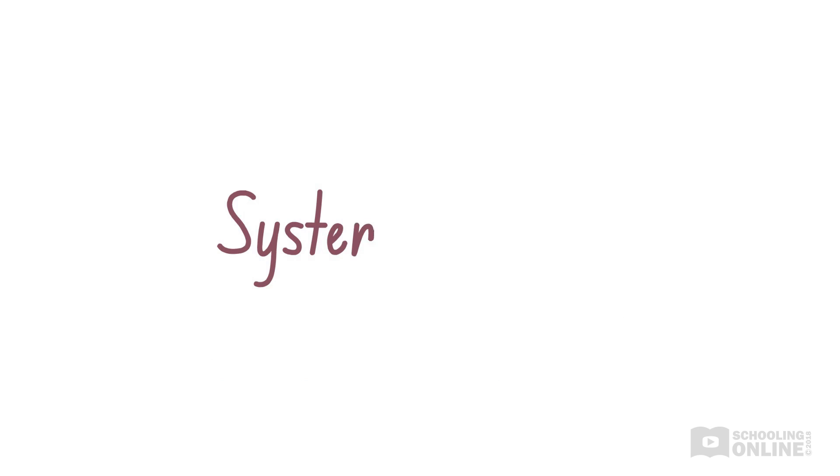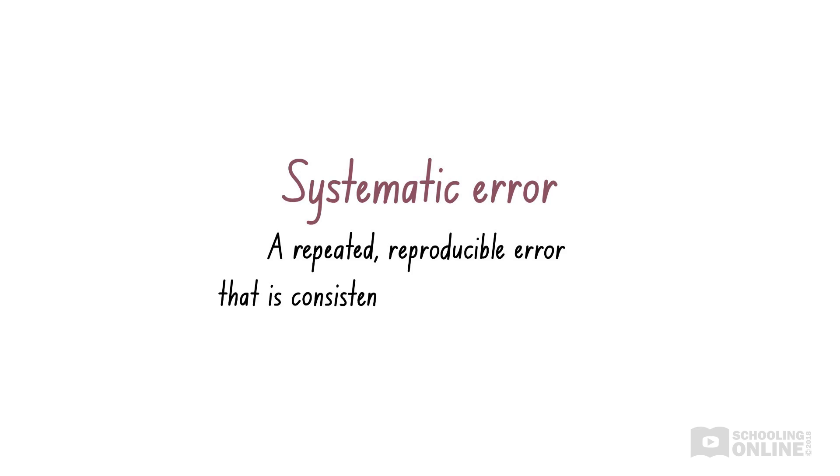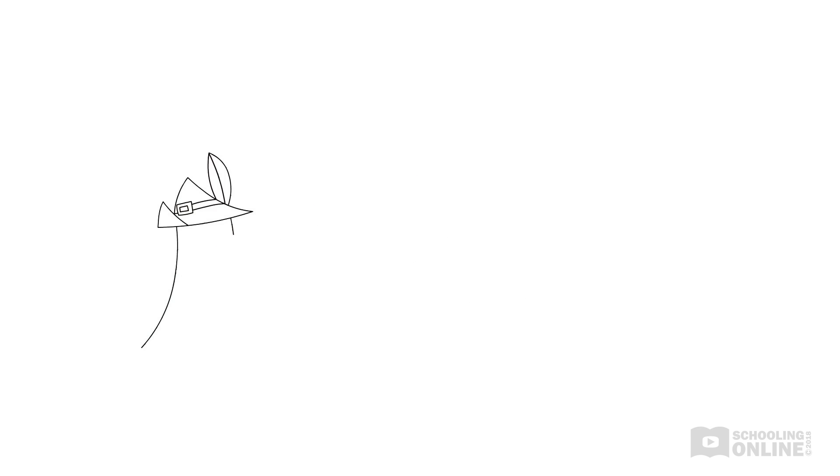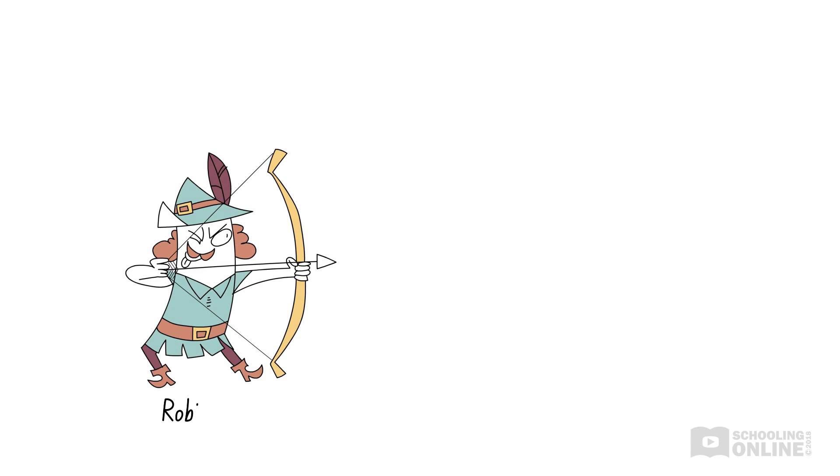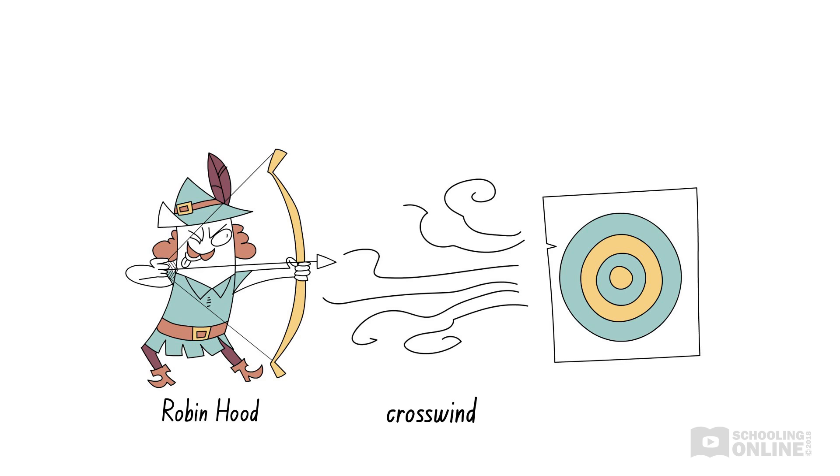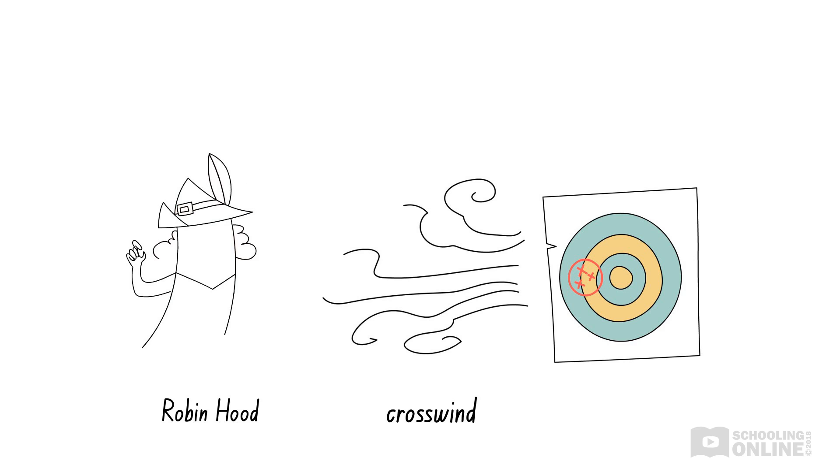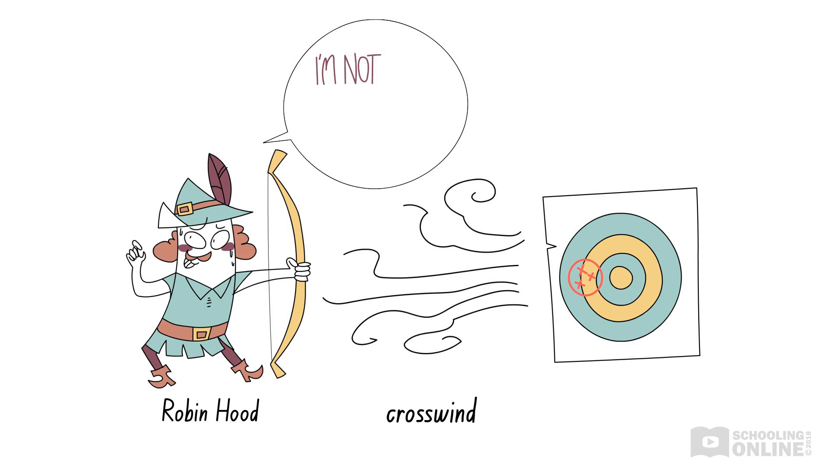This may be due to systematic errors. A systematic error is a repeated, reproducible error that is consistently in the same direction. To help understand what this means, let's go back to Robin Hood at the archery competition. This time, a strong crosswind is blowing to the left. Robin Hood still aims for the bullseye, but the wind blows each of his arrows to the left, so he always hits slightly left of the bullseye.